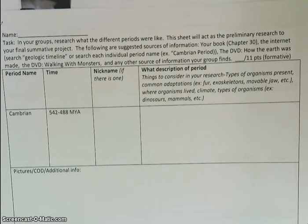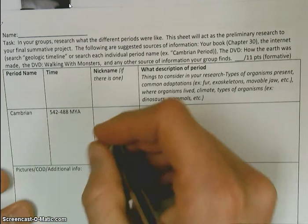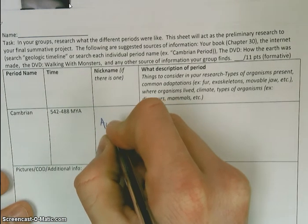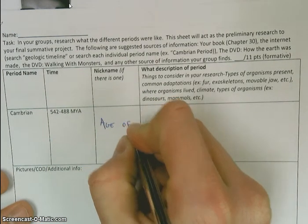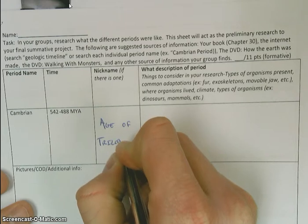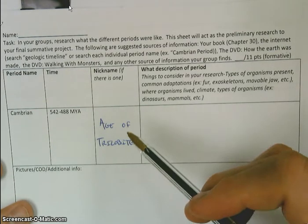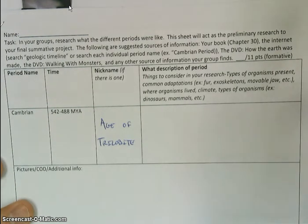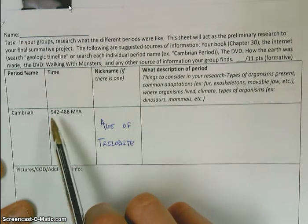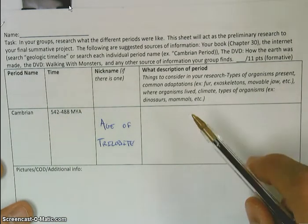Things we're going to be looking for are nicknames for the periods. A nickname like, for example, the Cambrian period is 'Age of the Trilobites.' Research those — some of them have nicknames, some of them don't. You're looking for the Cambrian period; if you come across it, great, if not, that's okay.